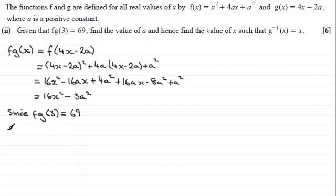So I'll just say that since fg of 3 equals 69, then therefore all I've got to do is replace the x here with the 3, so I'm going to get 16 times 3² minus 3a² and that's going to equal 69.